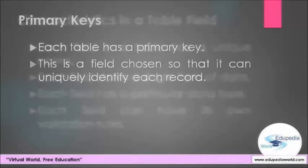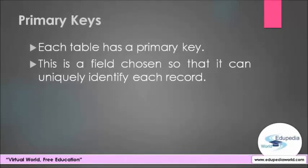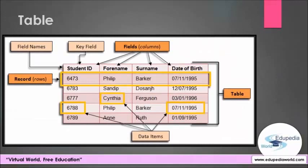The next concept we are going to learn is primary keys. Each table has a primary key, which is a field chosen so that it can uniquely identify each record. In the table shown earlier, there were two records with identical first name, surname, and date of birth but different ID values — because the ID field was the primary key of that table. Therefore we identified there were two different student records. Sometimes an existing unique attribute is used as the primary key, but most of the time some sort of ID is created. The importance of a primary key is that it makes it very simple to extract each of the records in the table.